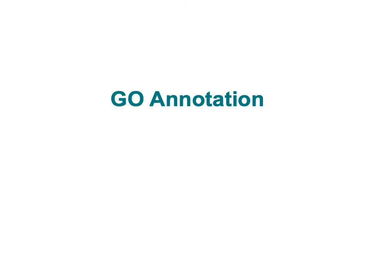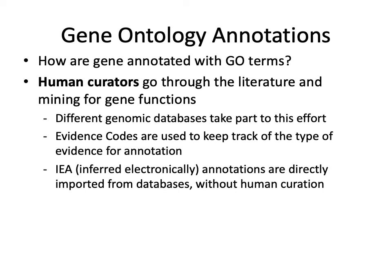Now that we've talked a bit about the structure of gene ontology, let's talk about how genes are assigned annotations from that ontology. At the core of the gene ontology database is a large collection of human curators whose job is to primarily go through the scientific literature and mine for annotations of genes being characterized for performing certain functions or being located within certain cellular compartments. Because gene ontology records gene function for many different organisms, many different databases and their people take part in this annotation effort.